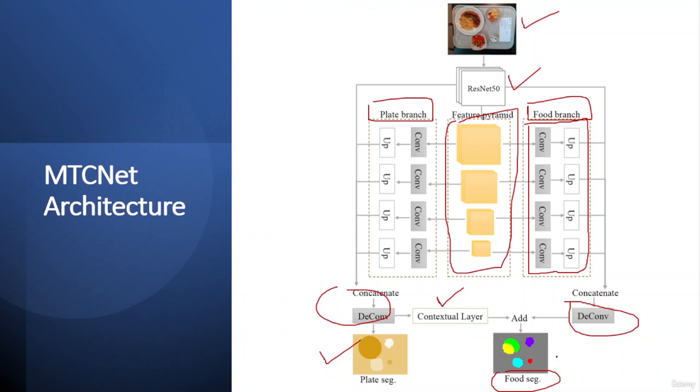So MTCnet takes a color image as input and outputs segmentation maps of the food type and the plate type simultaneously. This network employs a pyramid feature map fusion architecture that features a large receptive field and is thus able to overcome the problem of confusing the food type as commonly occurred in semantic segmentation algorithms.